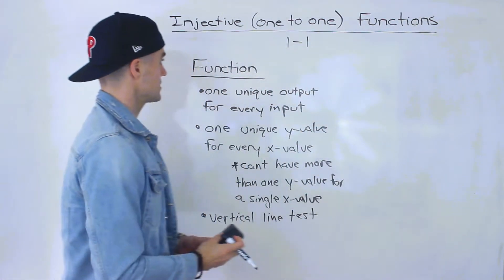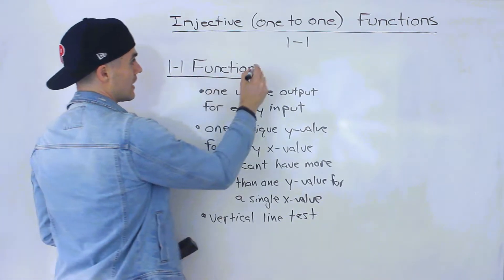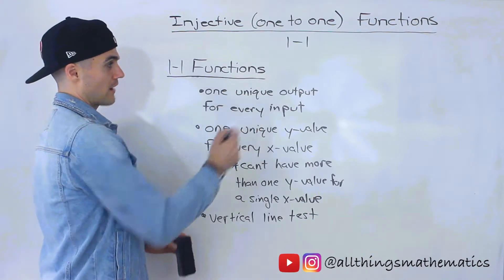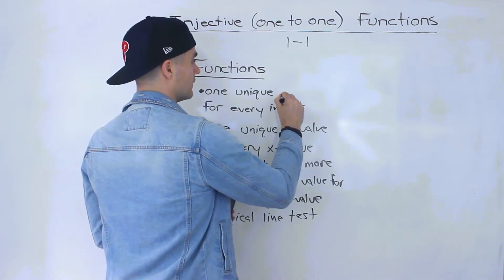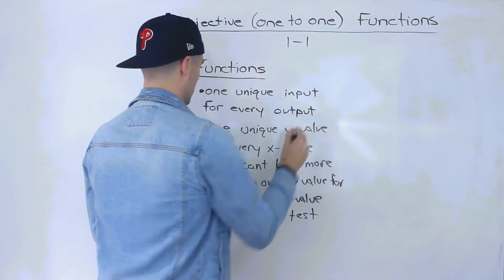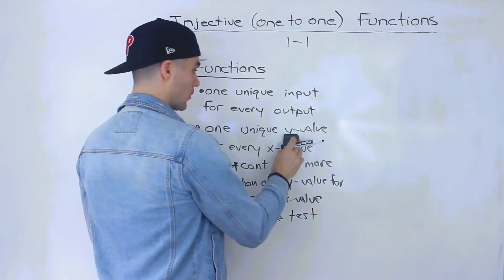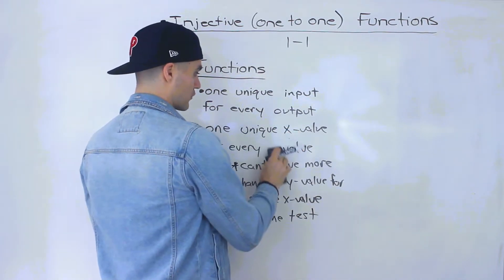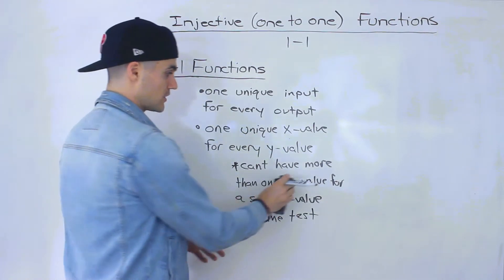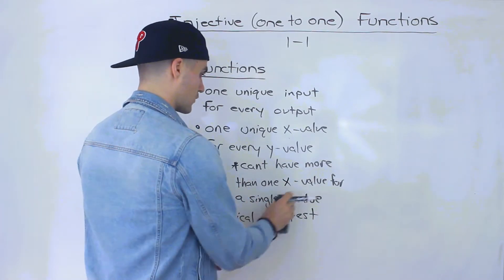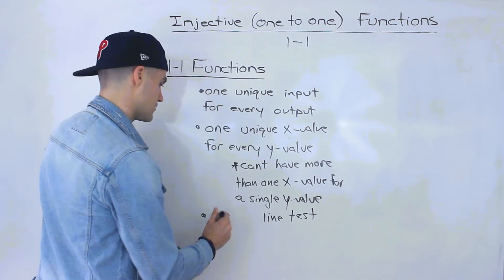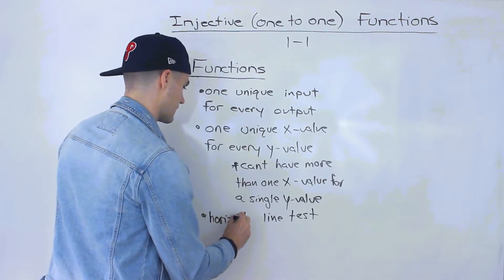For one-to-one functions, the definition is formatted very similarly except everything is reversed. Instead of one unique output for every input, it's one unique input for every output. Instead of one unique y-value for every x-value, it's one unique x-value for every y-value. You can't have more than one x-value for a single y-value. To test for this, instead of a vertical line test we use a horizontal line test.